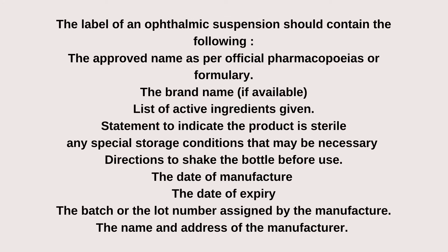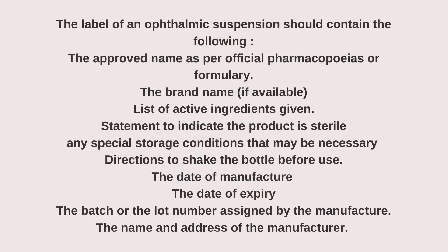The label of an ophthalmic suspension should contain the following: the approved name as per official pharmacopoeias or formula, the brand name if available, a list of active ingredients, a given statement to indicate the product is sterile, any special storage conditions that may be necessary, and a direction to shake the bottle before use.